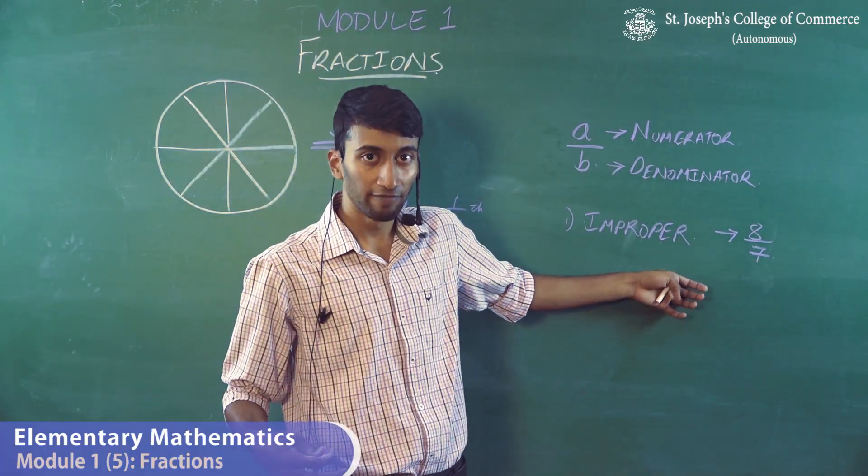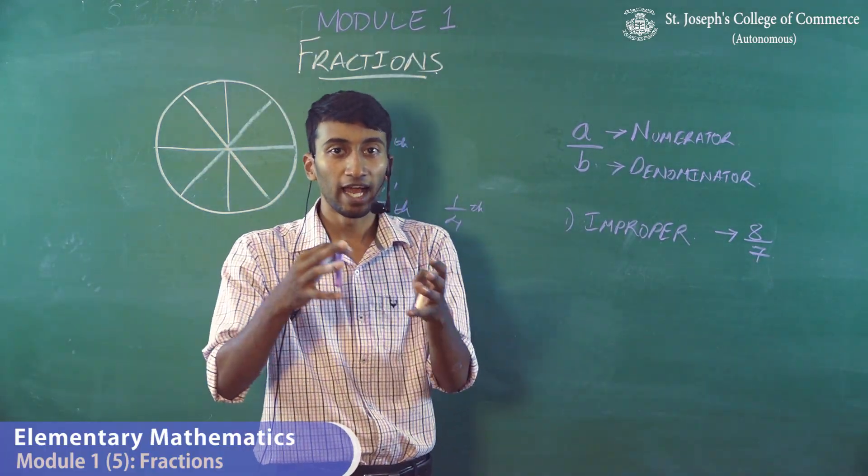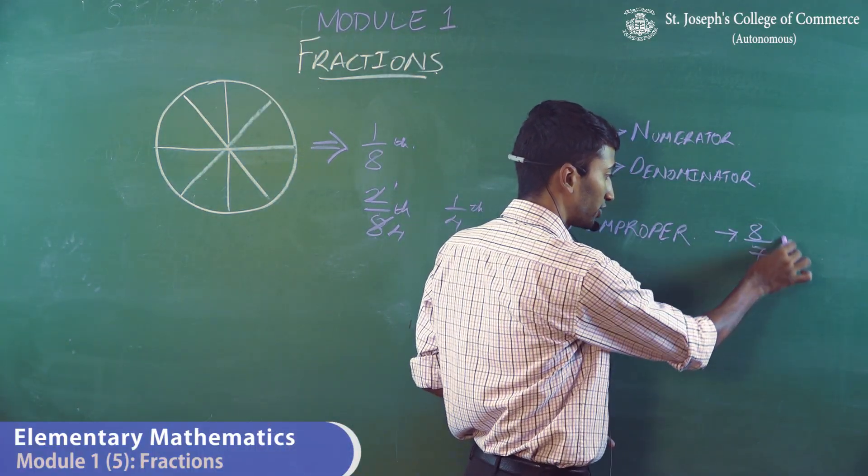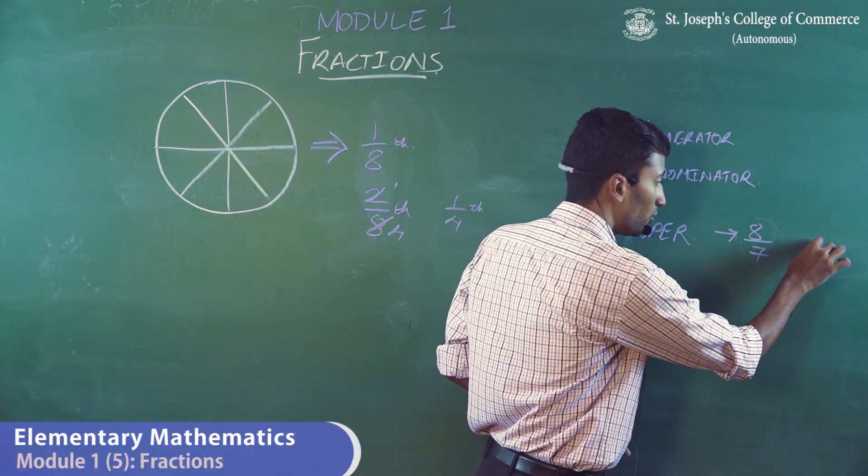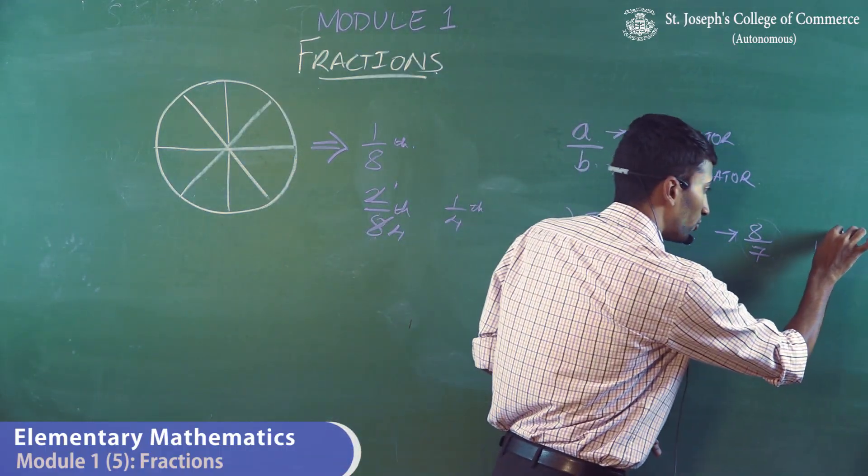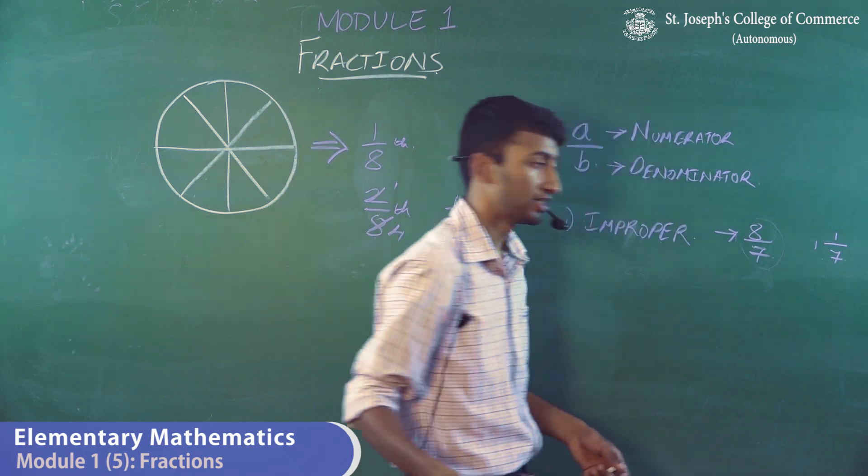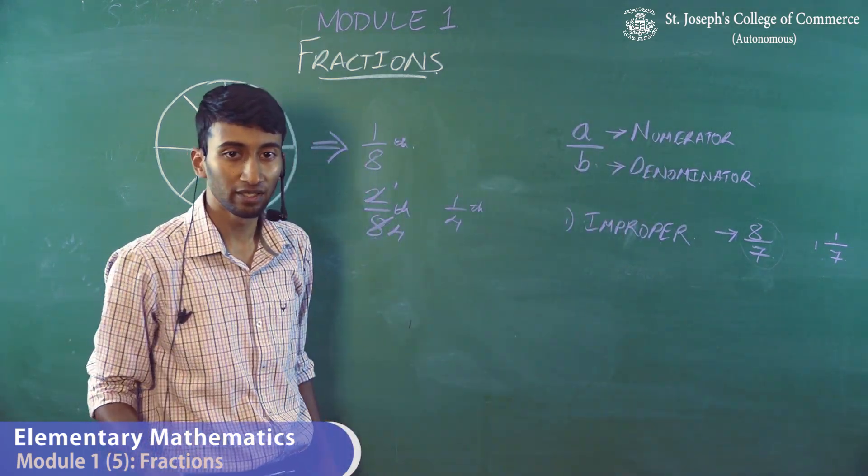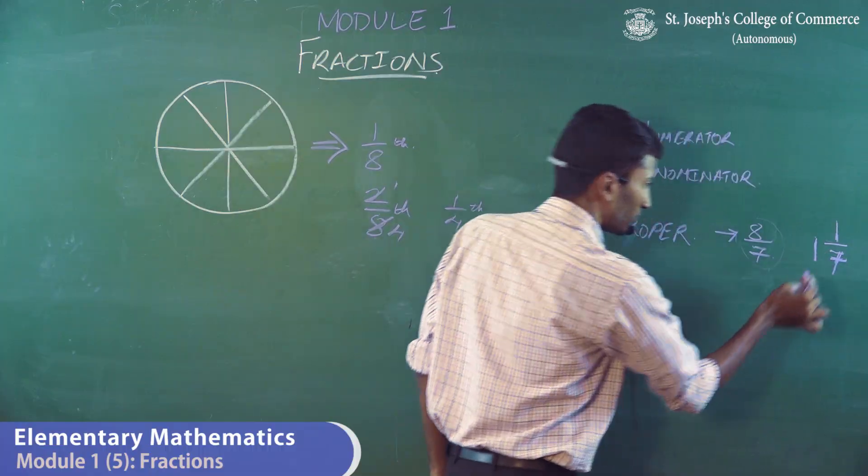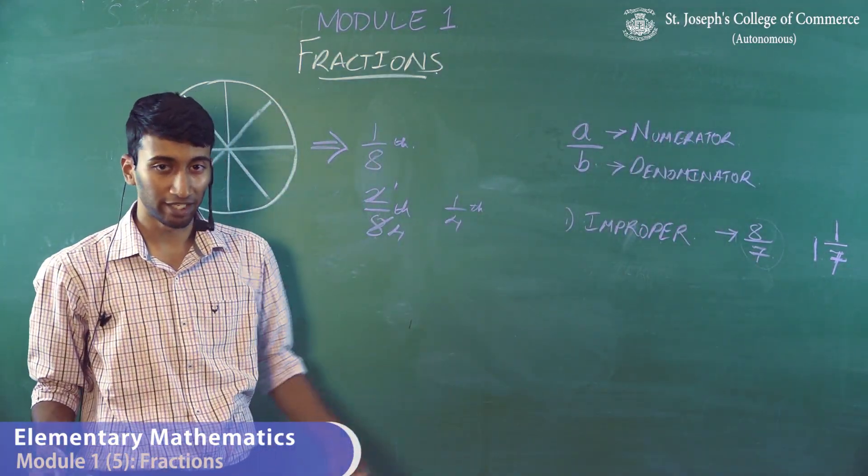So we convert an improper fraction to something called a mixed fraction, where there would be a whole number and a fraction. So I can convert this fraction to seven ones are seven. That means there's a remainder one, so one by denominator seven. That's how you represent a mixed fraction.